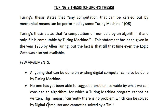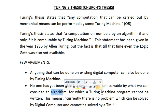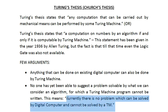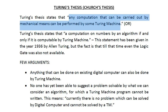The second argument states that no one has yet been able to suggest a problem solvable by an algorithm for which a Turing machine program cannot be written. This is a big statement: for any problem solvable by an algorithm, a Turing machine program can easily be written to solve it. Currently, there is no problem which can be solved by a digital computer and cannot be solved by a Turing machine.